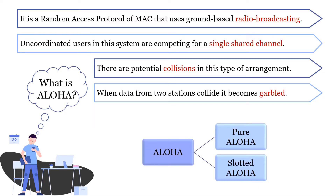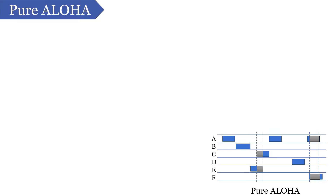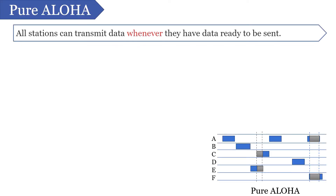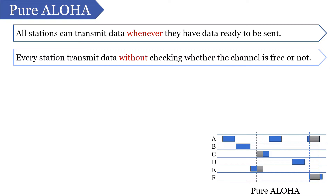The original Aloha protocol is pure Aloha protocol. Here, all stations, nodes, or users present on the network are allowed to transmit data whenever they have data ready to be sent. Before transmitting the data, stations don't even check whether the channel is busy or idle — they just randomly send data whenever they want to.